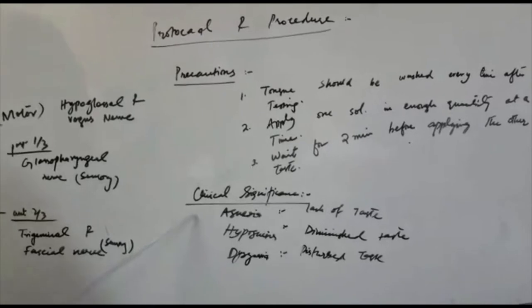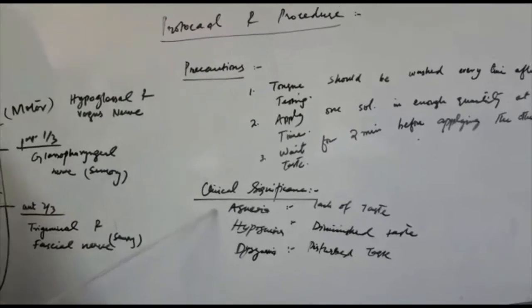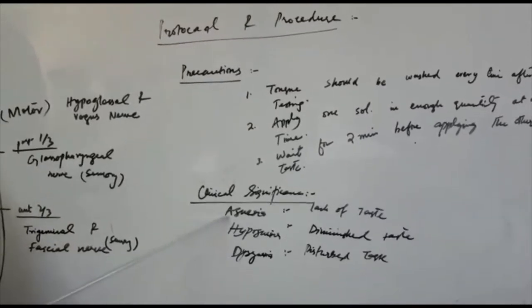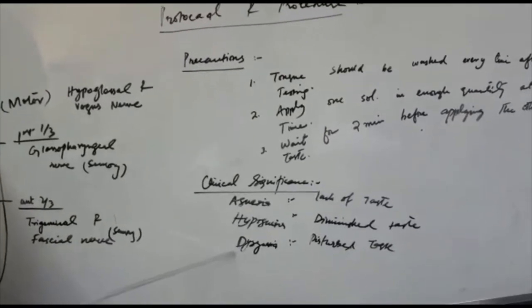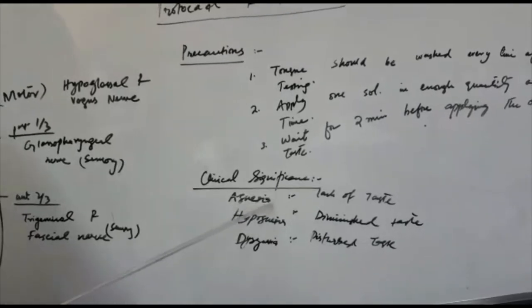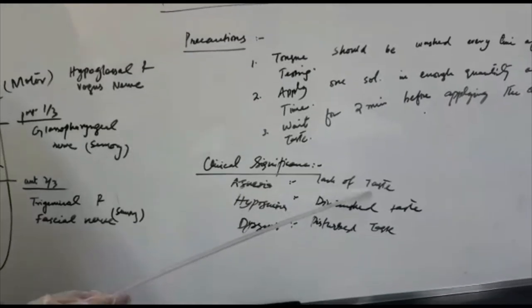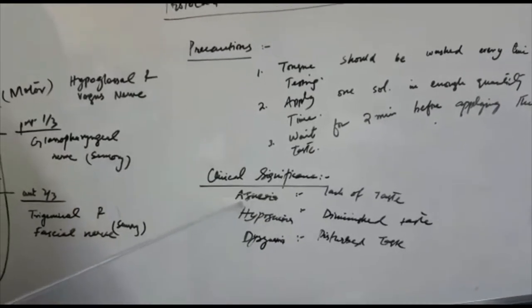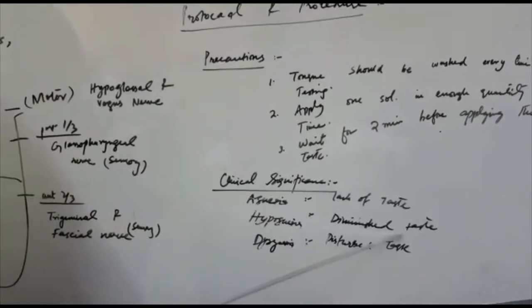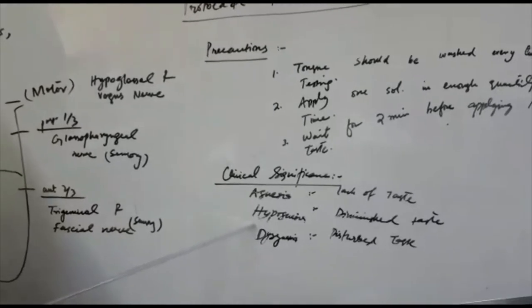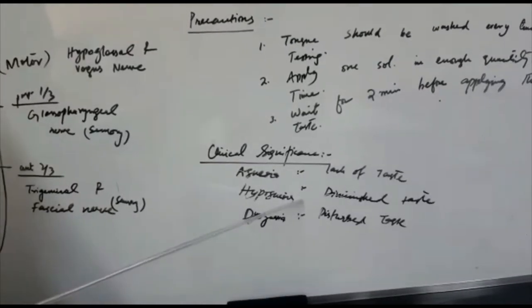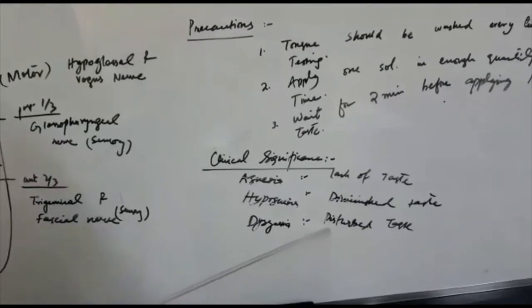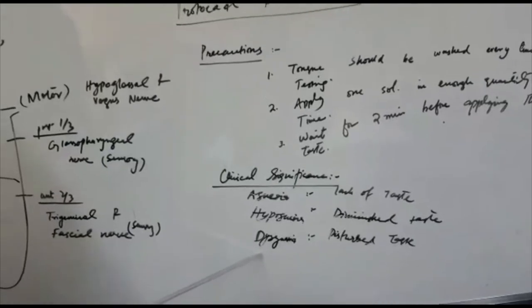Now let us see what are the clinical significances for this practical. There are 3 terms: ageusia, hypogeusia and dysgeusia. Ageusia is referred to lack of taste if your subject is not able to sense the taste sensation. Then diminished taste is called hypogeusia. If he feels lower than normal sensation of taste it is called hypogeusia and if the taste sensation is disturbed it is called dysgeusia.